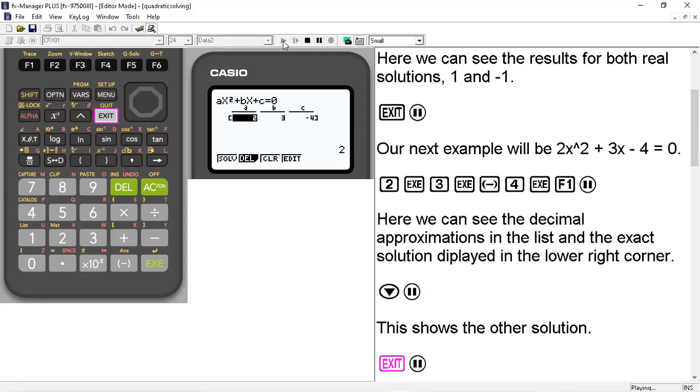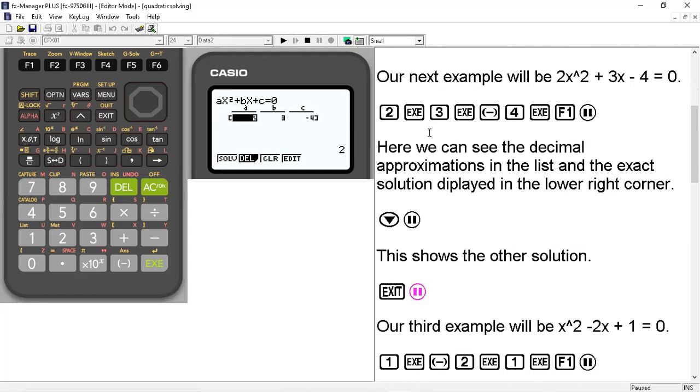So let's exit out of here, back to our coefficient screen. Our third example will be x² - 2x + 1 = 0. So we'll go ahead and type in our coefficients at 1x² - or -2x and then +1. So we'll go ahead and just put 1 in. And again, we'll hit F1 for solve.